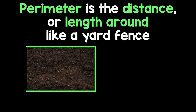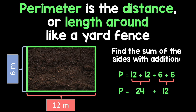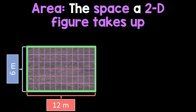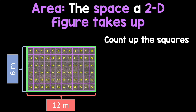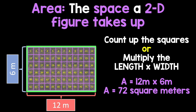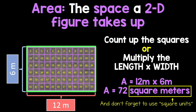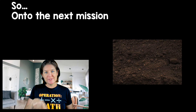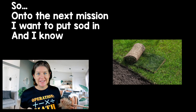Let me be of some assistance: perimeter is the distance or length around, like a yard fence. Find the sum of the sides with addition. You also gotta know about area — the space that a 2D figure takes up. Count up the squares or multiply the length times width, and don't forget to use square units. So onto the next mission — I want to put sod in.